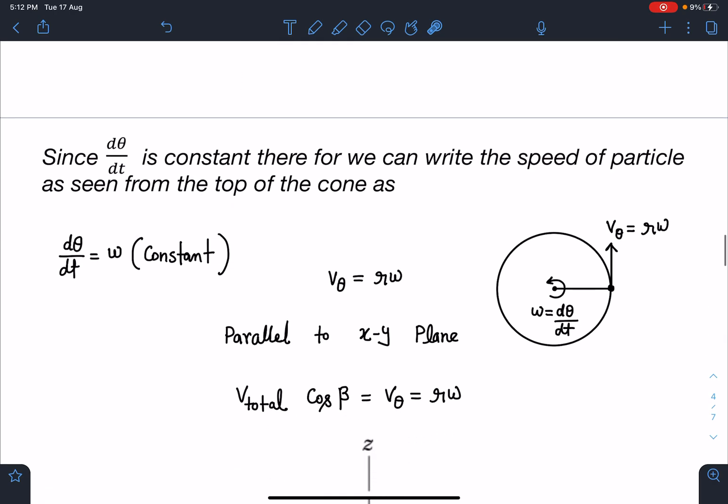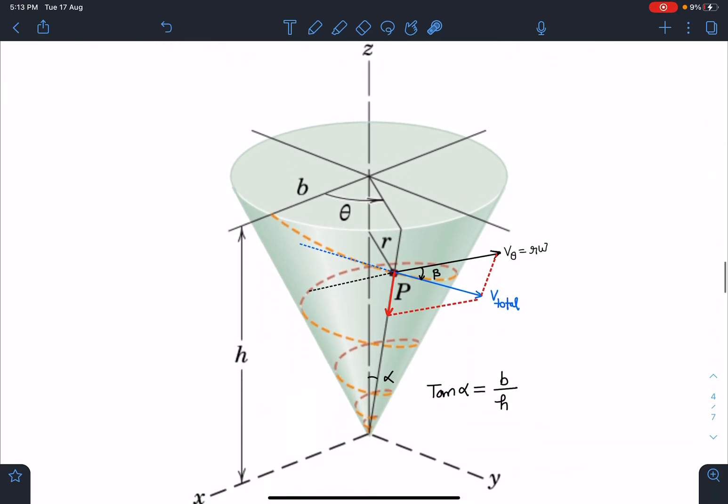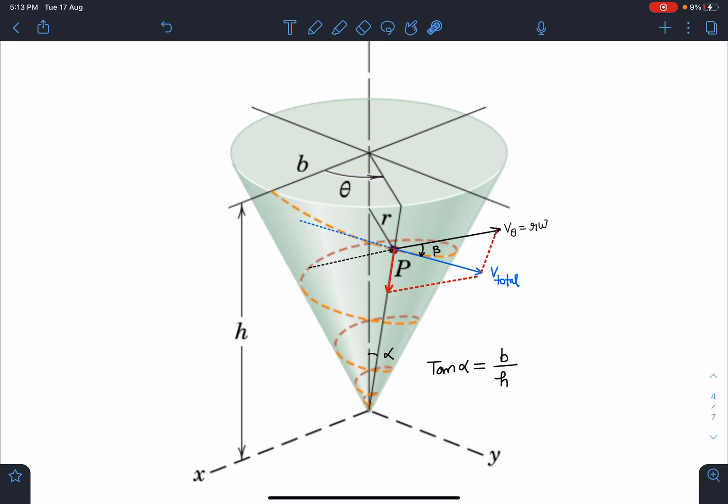Its motion is restricted such that the rate of change of angle is constant, meaning its ω of this circular motion as seen from the top is dθ/dt, which is constant. We'll take ω as constant. Let's solve this problem. Since dθ/dt is constant, we can write the speed of the particle as seen from the top - one component is in this direction with value rω.